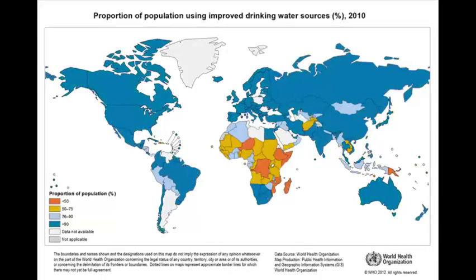Another map looks at the proportion of the population using improved drinking water sources. Red and yellow — that mustardy color — are places with lower percentages of access. When we look at mission work, many Christian churches in the United States send missionaries to Africa, and one of the biggest things they do is simply provide clean water. Something we take for granted is very critical to improving infectious disease rates in many countries and regions of the world.